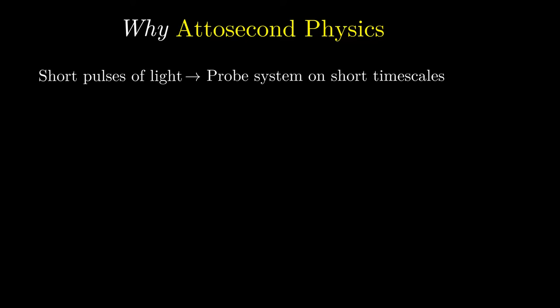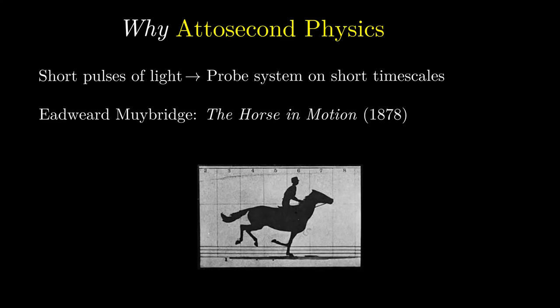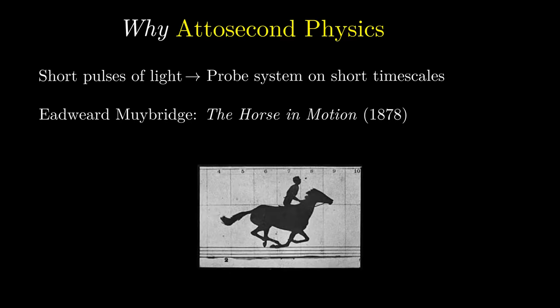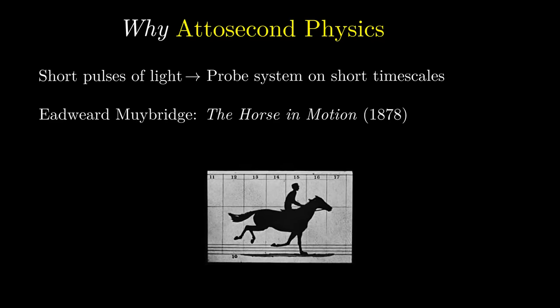One way to think about this technology is to first consider a series of images captured by the British photographer Edward Muybridge. In the 1870s he was able to capture the motion of a horse at very short intervals using tripwires to show that a galloping horse can have all four legs off the ground at the same time.